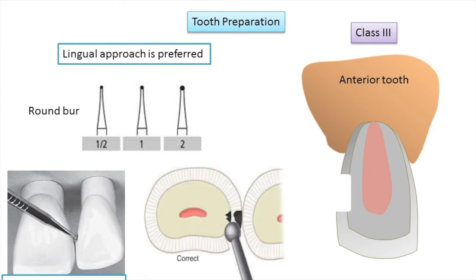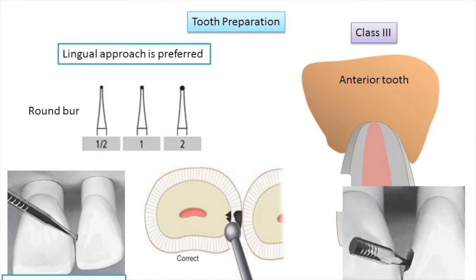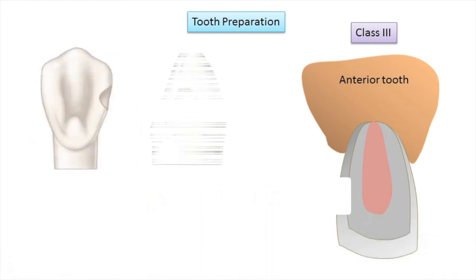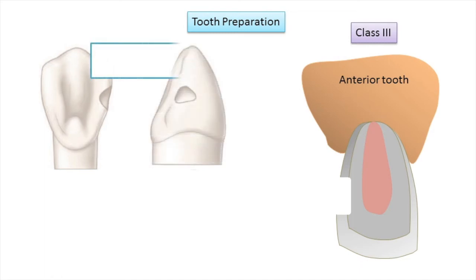The correct angle of entry is parallel to the enamel rods on the mesiolingual angle of the tooth. If the instrument is incorrectly placed and the cavity preparation is overextended, it could lead to improper bonding of the restorative material. The same bur or diamond is used to enlarge the opening for caries removal. For small Class 3 preparations, no effort is made to prepare walls perpendicular to the enamel surface; the walls diverge externally from the axial depth, resulting in a beveled marginal design that conserves internal tooth structure.